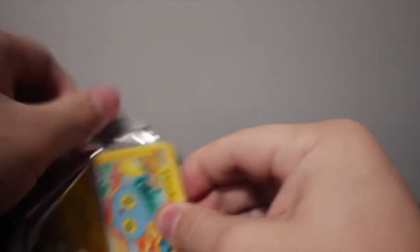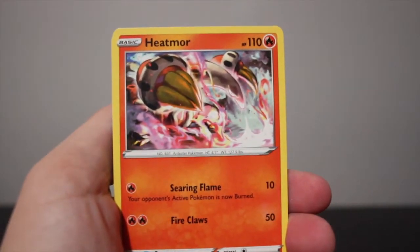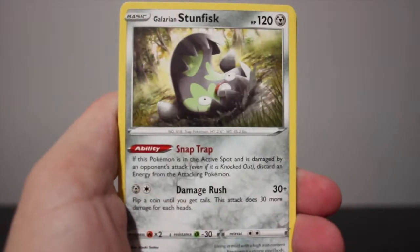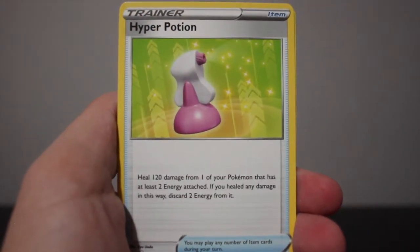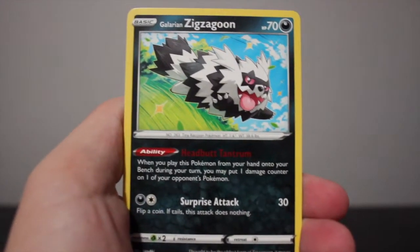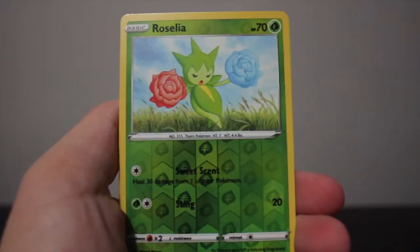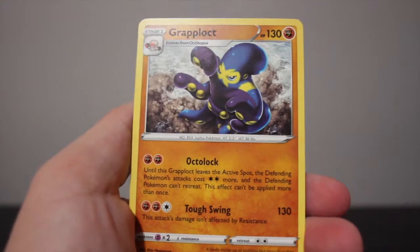Okie dokie, we continue on our journey. Eevee, Stunfisk, Hyper Potion, Chinchou, Sizzlipede, Zigzagoon, Munna, Snom, Roselia, and a Cramorant non-holo. Oh well.